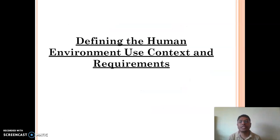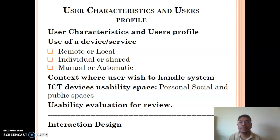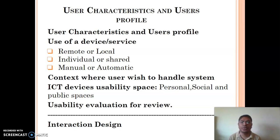The next part is defining the human environment use context and requirements. First, we must focus on the user's characteristics and user profile. User characteristics describe the behavioral aspects of the user, and the user profile describes the various privileges available to the user — what the user can do and what the user expects.